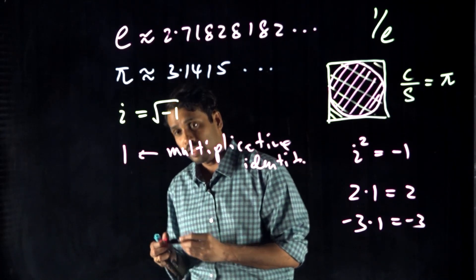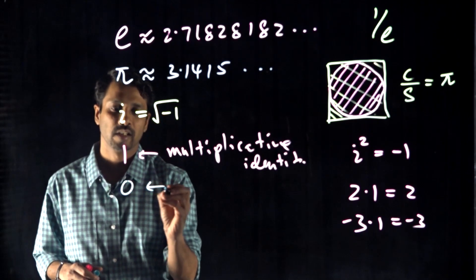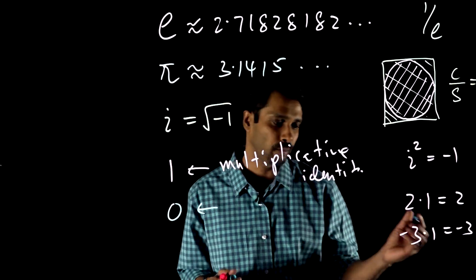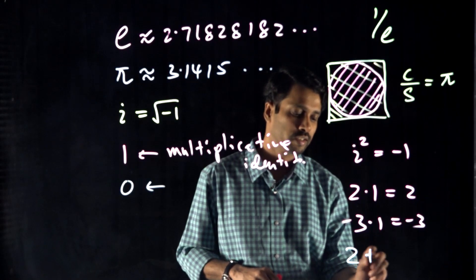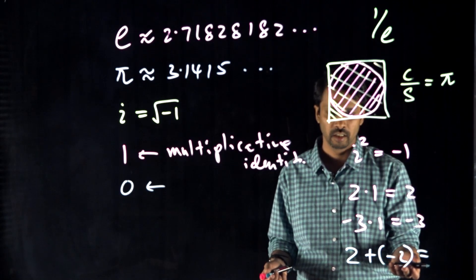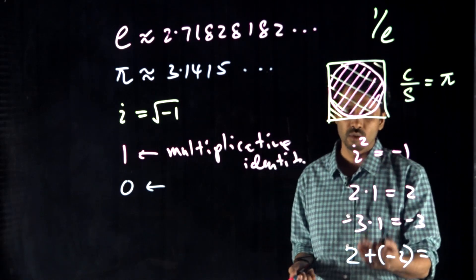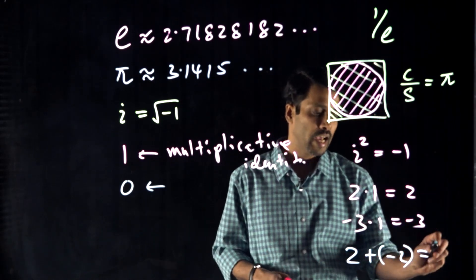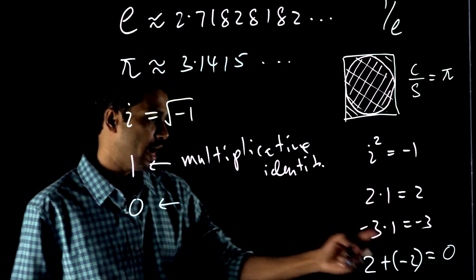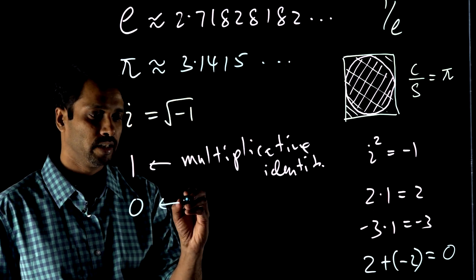There's another interesting number: 0. You might think 0 is nothing, but without 0 we can't do most things. For example, if someone asks what happens with a certain calculation and you don't know about 0, you don't have an answer. We know that when you add 2 with negative 2, they annihilate and you end up getting 0 — they disappear. So that's what we call the additive identity: when you add a number with its inverse, you get the additive identity.